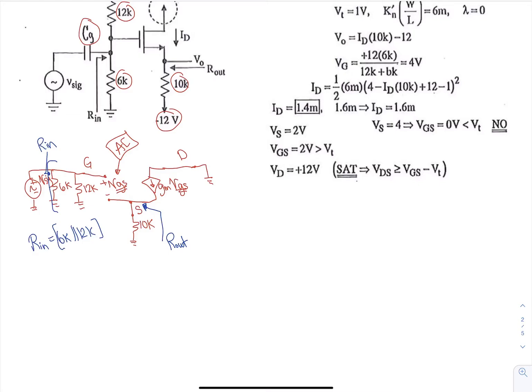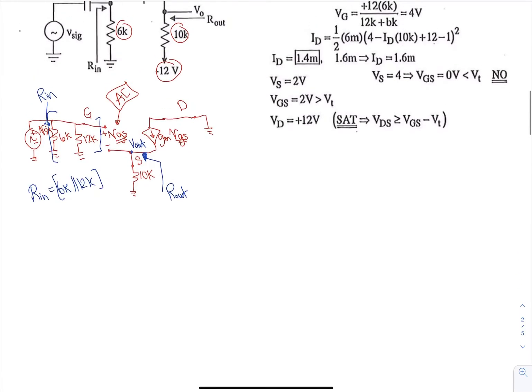And our Rout is going to be looking in to this node here. So I'm going to go over this Rout in the equivalent resistance video, because that is going to be a common form that we're going to see. And I'm going to show you how to analyze for that one. And here would be our Vout. So this would be how to draw the hybrid pi.